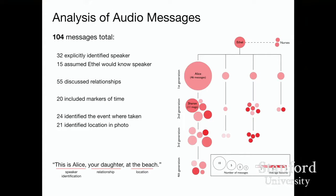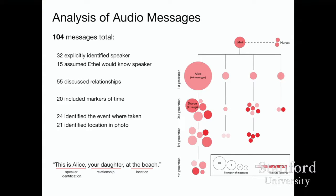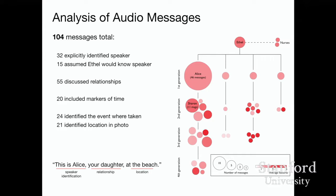Now that this family has generated all this data, we can understand the sorts of messages they're crafting for Ethel. This is Ethel's family tree broken down by generation. The size of each circle represents how many messages each person created, and the color represents how many features were coded in that message — for example, markers of time or relationship. Over and over we saw Alice — who knows her mother best and interacts with her daily — recording messages like 'This is Alice, your daughter, at the beach,' always identifying herself and her relationship. Whereas many other family members didn't think to do this. Even this level of authoring gives insight into the types of support someone with late-life memory loss might need.